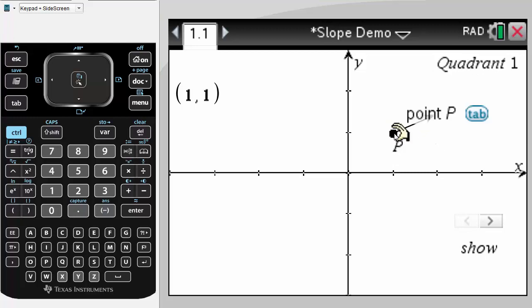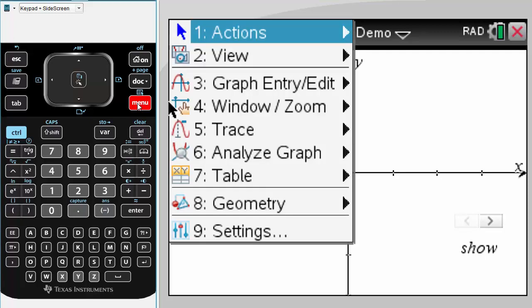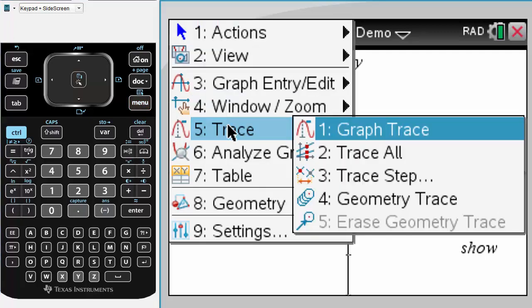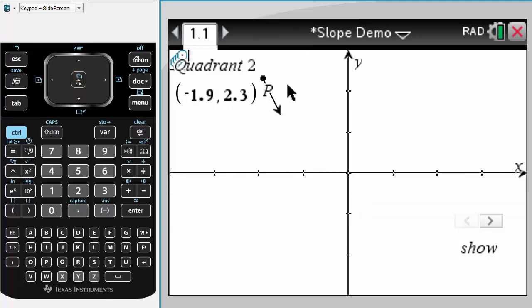Now what I'm going to do is place our point over here in quadrant 2. We'll use the geometry trace tool to leave a trail of our point as we follow our slope vector. So it's pointing downwards, so we'll track downwards, and we can see that it starts to flatten out.